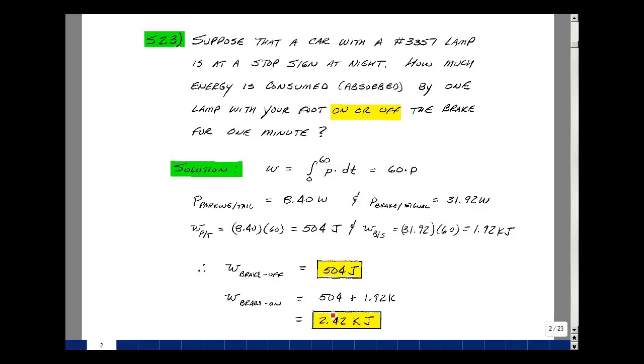We put our foot on the brake, we have the parking and tail light filament lit and the braking and signal filament lit. So with our foot on the brake, we would then be absorbing power for both those filaments and that would be the summation of those two, it would be 2.42 kilojoules.